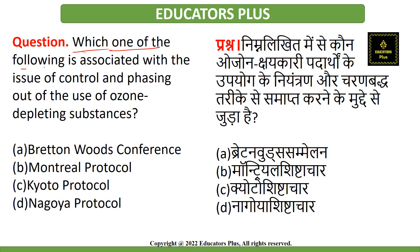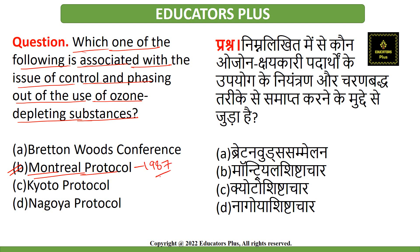The next question is: which one of the following is associated with controlling and phasing out the use of ozone depleting substances? The correct answer is option B — the Montreal Protocol. The Montreal Protocol came in 1987 to control and reduce the use of ozone depleting substances.